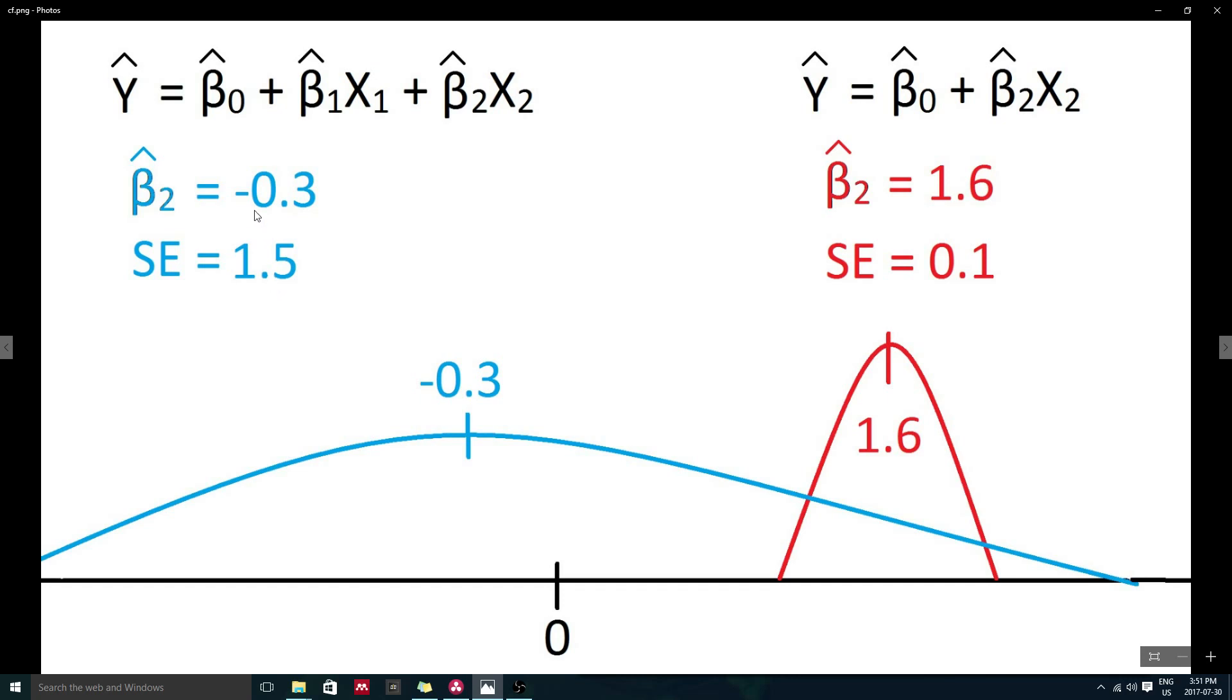Note that the regression coefficient for x2 actually changed signs. Before it was positively related to y, and now it's negatively related to y. Let's pause and think about this for a second, because in real research this can be somewhat problematic. Let's say a doctor is trying to predict a person's weight using their age and their height.